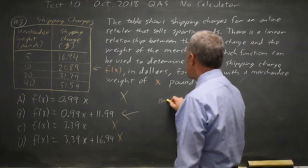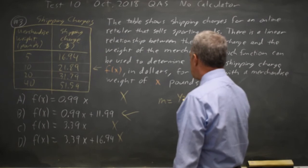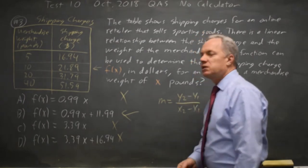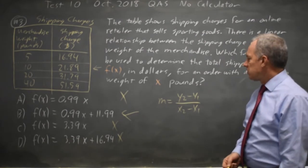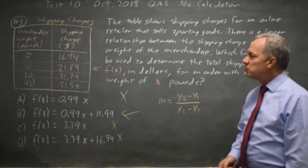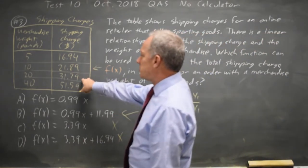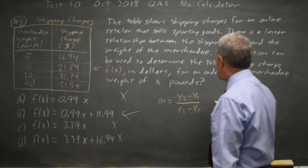I could find the slope is y2 minus y1 over x2 minus x1. It doesn't matter which values you call x1 and x2 as long as you keep them in the same order. The y values are the f of x values, the shipping charges. So let's go between 10 and 20 because that gives me a nice denominator.